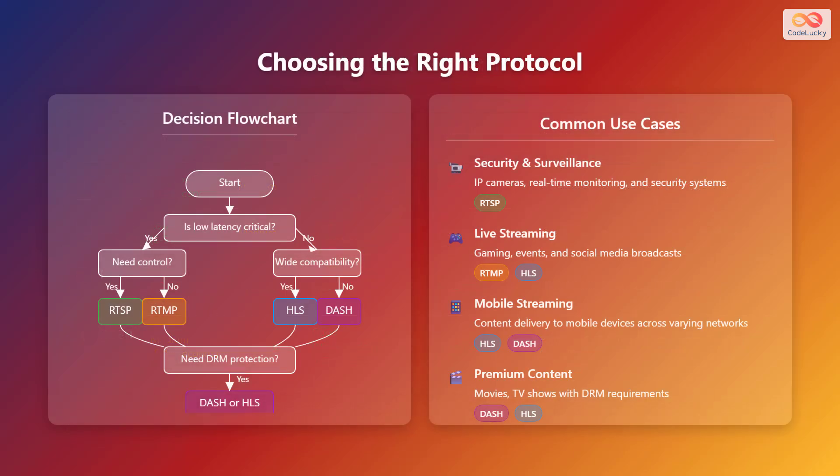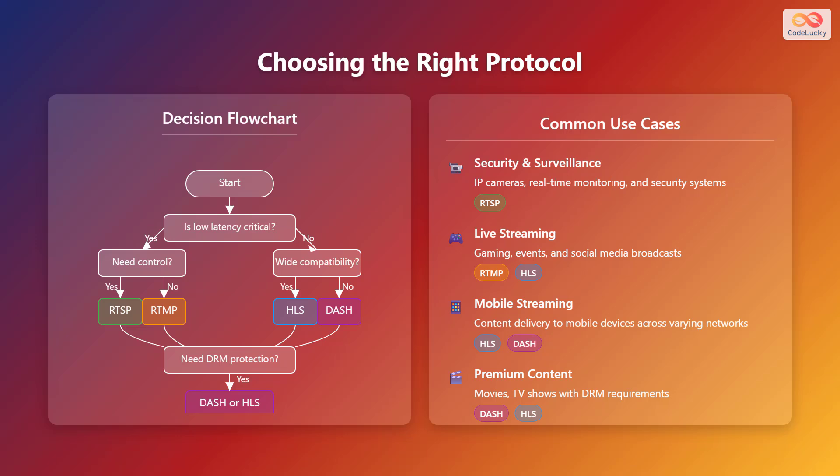Choosing the right protocol depends on your specific needs. If low latency is critical and you need control, consider RTSP. If you need low latency but less control, RTMP might be suitable. For wide compatibility without strict latency requirements, HLS is a good choice. If you need DRM protection and advanced adaptive bitrate capabilities, DASH is a strong contender. Common use cases: RTSP for security and surveillance, RTMP and HLS for live streaming, HLS and DASH for mobile streaming, and DASH and HLS for premium content.